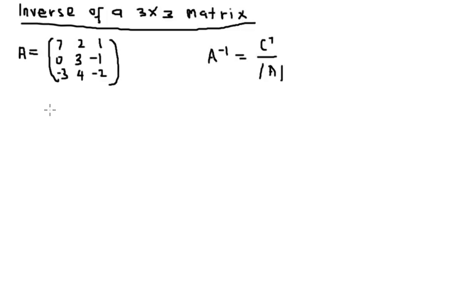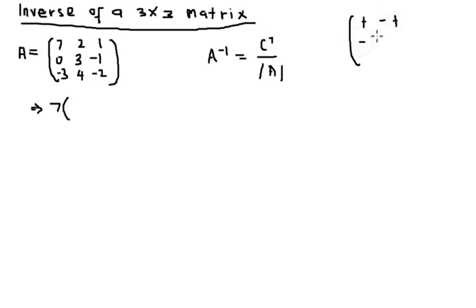To find the determinant of matrix A, I'll go through it again just in case. We bring out seven outside and draw the little sign box: plus minus plus, minus plus minus, plus minus plus. This sign table should always be with you whenever you want to find the cofactor of any matrix, especially a 3x3 matrix — it helps you remember the signs in front.